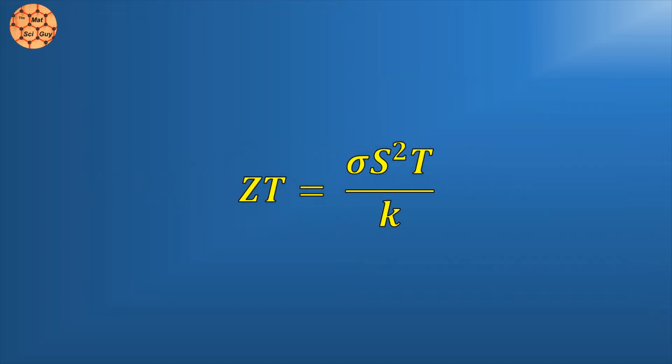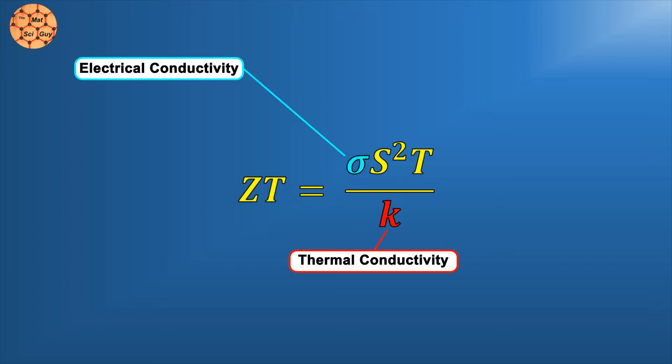The specific components of the ZT value for a certain temperature are electrical conductivity, thermal conductivity, and the Seebeck coefficient, which is simply how many volts of potential per degree temperature difference. To make materials with a high ZT value, we want to increase electrical conductivity and the Seebeck coefficient, and reduce thermal conductivity.